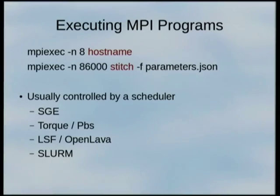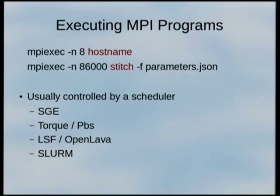MPI is a pain. Has anybody here ever used MPI? It's a pain — you'd agree. There are a lot of people trying to find better solutions. You run it with mpiexec -n 8 hostname to run the hostname application on eight nodes — one application spread and run across all those nodes. In our case, 86,000 copies of stitch with extra parameters. Usually these things are submitted into queues — Torque, PBS, or SGE — where you specify how much processing and how many cores you want.